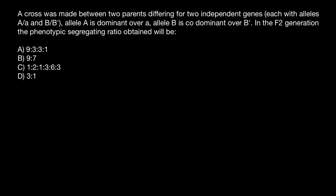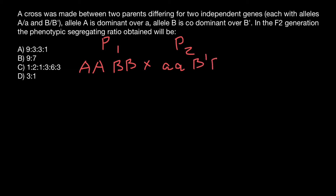We are told that we have two parents differing for two genes, A and B. Let's say that the genotype of parent one is going to be capital A, capital A and capital B, capital B. We cross with parent two, whose genotype is going to be small a, small a and capital B', capital B'.